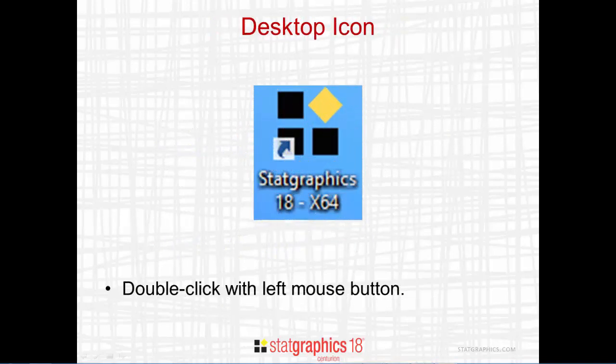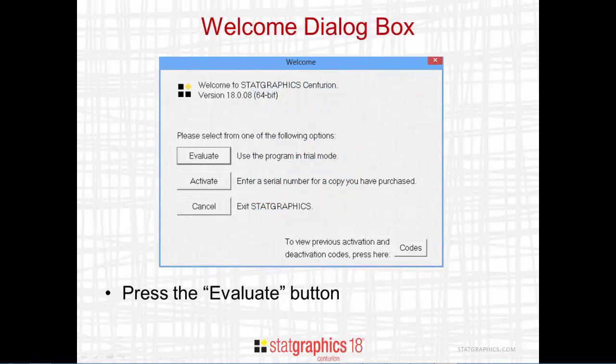When StatGraphics 18 is downloaded and installed on your computer, an icon similar to that shown here is created on your desktop. To start the activation process, double-click on the icon with your left mouse button. When the program starts up, you'll see this welcome dialog box. Press the Evaluate button.